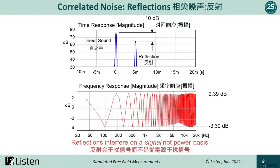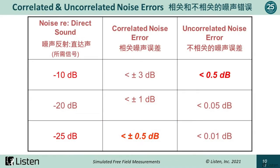If we have a reflection that is 10 dB below the direct sound, this can cause significant peaks and dips in a loudspeaker's frequency response because it is correlated in phase with the direct sound. This will result in errors of plus 2.39 dB to minus 3.3 dB and generally is unacceptable for comparing results in different rooms. For a small measurement error of plus or minus 0.5 dB or less, with uncorrelated noise we need to be at least 10 dB below the direct signal, and for reflections which are correlated, we need to be at least 25 dB below the direct sound.